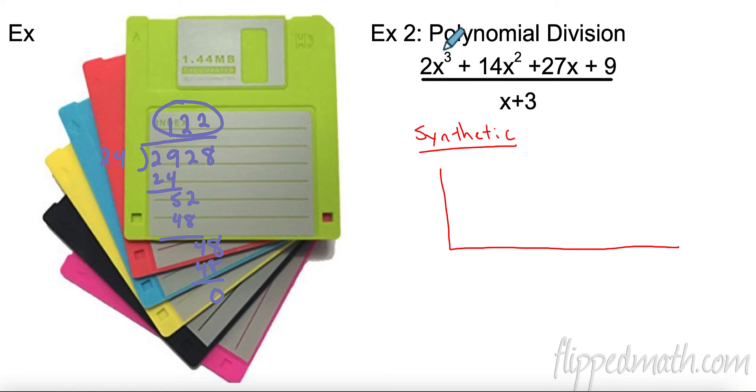So the first thing I want to do is I want to make sure I have every degree of my polynomial. I have a third, second, first, and this is like x to the 0, right? So I'm going to write down just the coefficients. 2, I'm going to give myself some space, 14, 27, and 9. If one of these was missing, I would put a 0 there. Now, on the side, I'm going to figure out what number I need to divide by. So I have to solve this, and that's negative 3. So over here, I'm going to put negative 3.